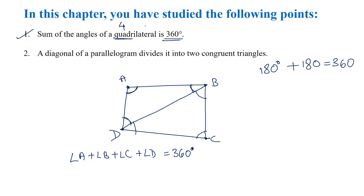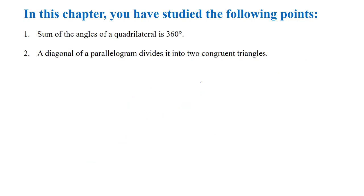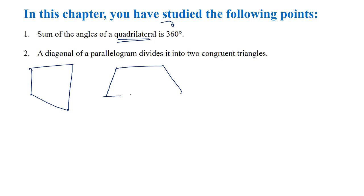We have seen that a diagonal of a parallelogram divides it into two congruent triangles. After that we have seen the types of quadrilaterals. A simple or general quadrilateral is just made up of four sides. After that we have seen trapezium — if one pair of opposite sides is parallel, then it is a trapezium. For example, in quadrilateral ABCD, if AB is parallel to CD, then it is a trapezium.